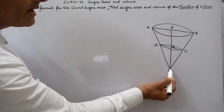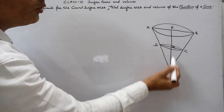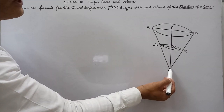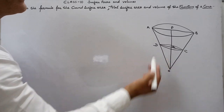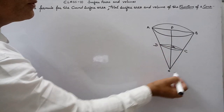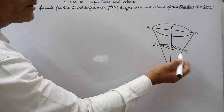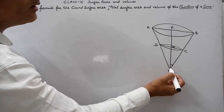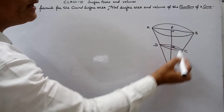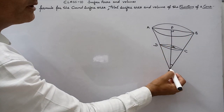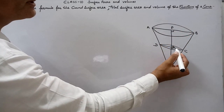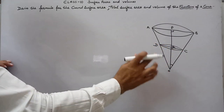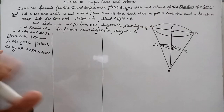We will make triangles OPB and OQC similar. Angle POB is common to both triangles. Angle OPB is 90° and angle OQC is 90°, because this is a right circular cone. By AA criteria of similarity, these two triangles are similar.